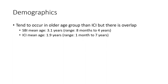Demographics: small bowel intussusception tends to occur in older age groups than ileocolic intussusception, but there is overlap. SBIs have a mean age of 3.1 years, ranging from 0 to 4 years. ICIs have a mean age of 1.9 years, ranging from 1 month to 7 years.